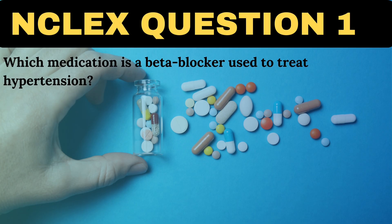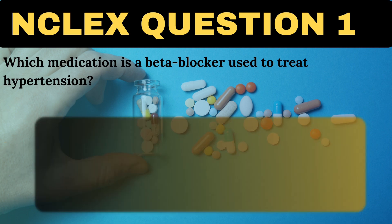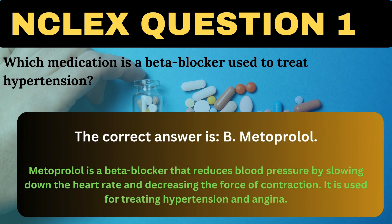Which medication is a beta blocker used to treat hypertension? A. Lisinopril. B. Metoprolol. C. Amlodipine. D. Losartan. The correct answer is B, Metoprolol. Metoprolol is a beta blocker that reduces blood pressure by slowing down the heart rate and decreasing the force of contraction. It is used for treating hypertension and angina.